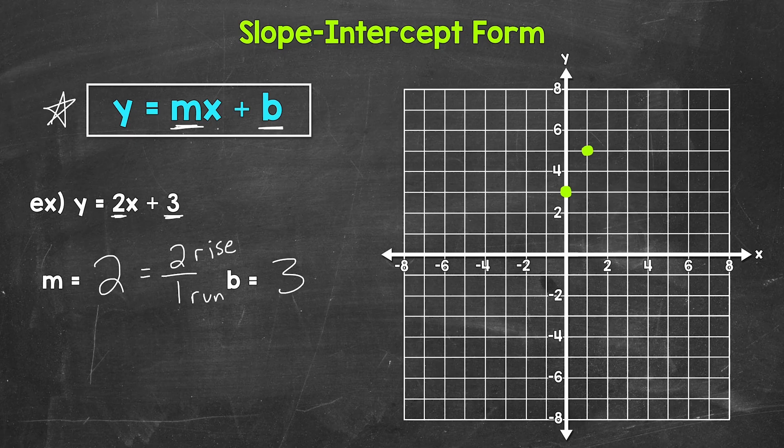Now we can use that slope to plot as many points as we would like. But once we have 2, we can draw our line through the 2 points. And we are done. Our line is graphed.